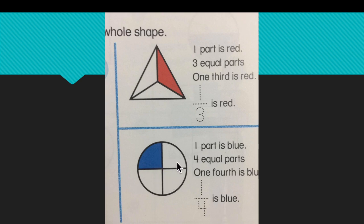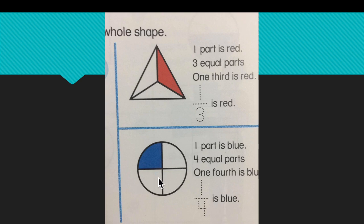Look at the circle. First, count how many parts the circle is divided into: one, two, three, four. It has four equal parts, so we write number four under the line — this is the number of equal parts forming the whole shape. How many of these parts is colored blue? Only one part. So we write number one on the top. We read this fraction one-fourth, which means only one part out of four parts is colored blue.